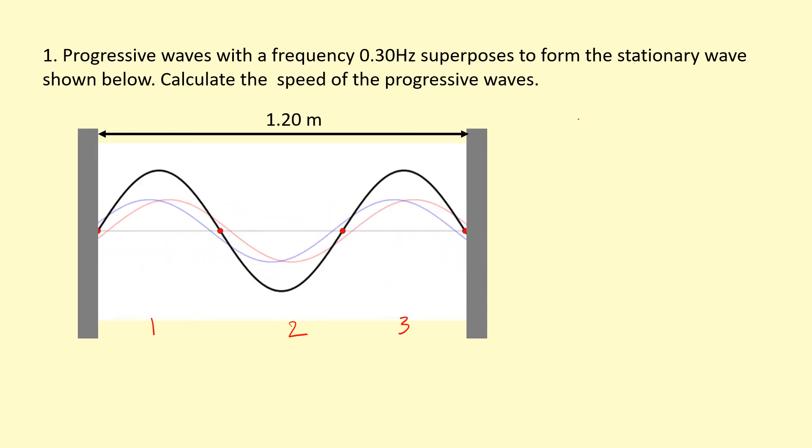So what I'm going to do is I'm going to take that 1.20 meters and divide that by three loops and times that by two to get the wavelength. So that gives me a wavelength of 0.8 meters.